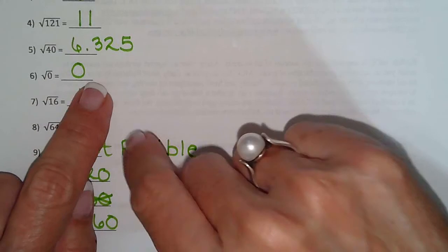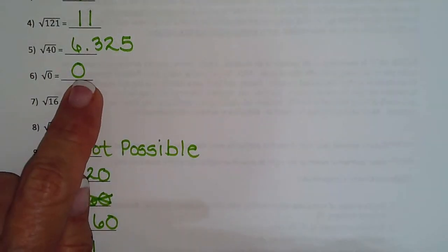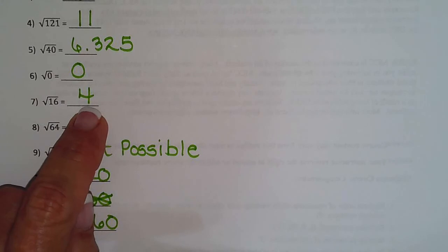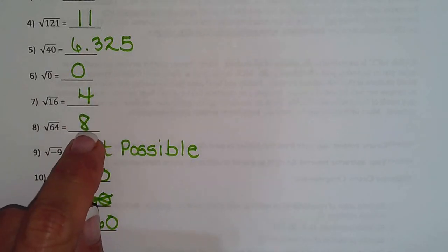So square root of 0 is 0 because 0 times 0 is 0. Square root of 16 is 4 because 4 times 4 is 16. Square root of 64 is 8 because 8 times 8 is 64.